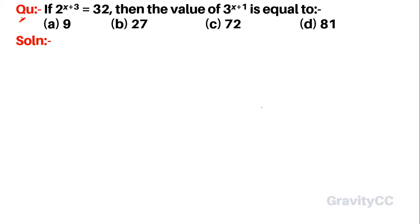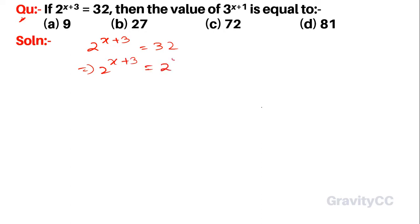The question: if 2 to the power x plus 3 is equal to 32, then the value of 3 to the power x plus 1 is equal to? Given that 2 to the power x plus 3 is equal to 32, and 32 is 2 to the power 5.